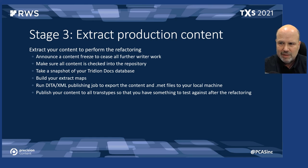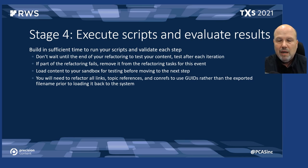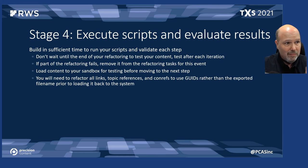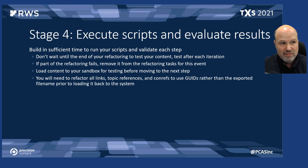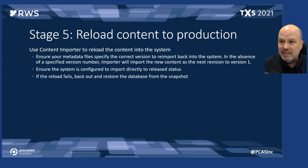Execute and evaluate the results: break your refactoring down into stages depending on what you're introducing, and keep testing after each iteration. If any part of the refactoring fails, back it out and move on to the next task. Load your content into your sandbox for testing before moving to the next steps. Remember that you'll need to refactor all links, topic references, and con refs to use GUIDs rather than the exported file names that come out of the transform.